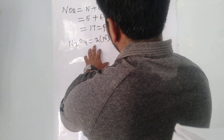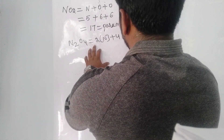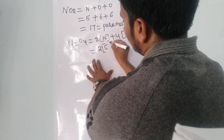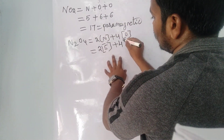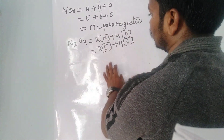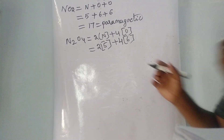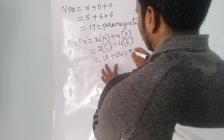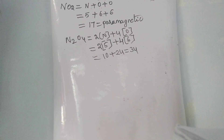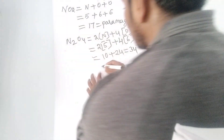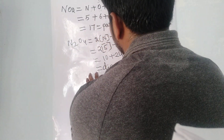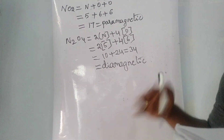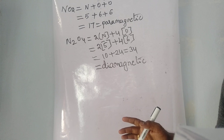Example: N2O4. Write N + N + O + O + O + O. Nitrogen has 5 valence electrons, each oxygen has 6. Sum: 5 + 5 + 6 + 6 + 6 + 6 = 34. Since 34 is an even number, N2O4 is diamagnetic in nature.